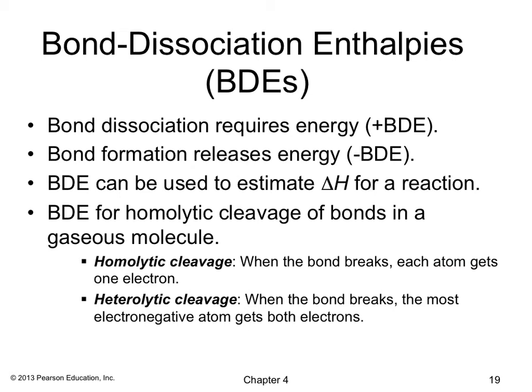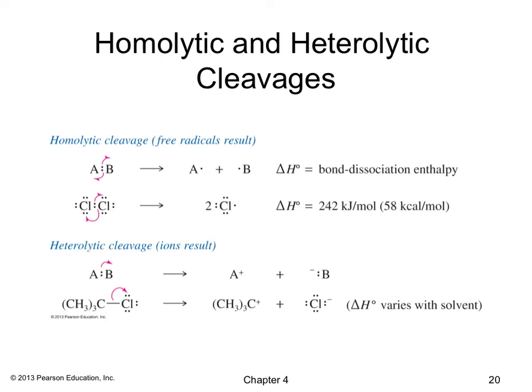Heterolytic cleavage is when the electronegative atom gets both electrons. In homolytic cleavage — for example, Cl2 splitting into two chlorine radicals — half arrows are used and ΔH equals the bond dissociation enthalpy, a positive number. In heterolytic cleavage, a full arrow is used; both electrons go to the chlorine, giving it a negative charge and leaving a positive charge on the other atom. The ΔH for heterolytic cleavage varies with solvent, and BDEs do not necessarily apply to heterolytic cleavage reactions.